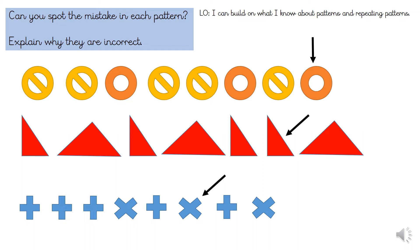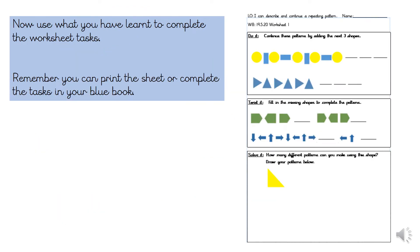Now we're going to look at what your task is today. Your task is to complete the do it, twist it, solve it sheet. You can print this sheet off or complete the tasks in your blue book. Remember to look at each pattern carefully — how does it repeat and what would the next shapes be? You'll also see that some tasks are to fill in the missing shapes. Work out how the pattern repeats before you fill in the missing shapes. Finally, you've got a problem for the solve it: use a triangle to work out as many different patterns as you can. Remember, they must be different.